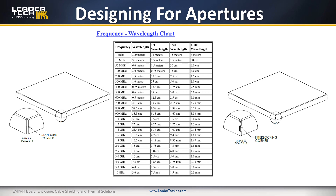One design that we like to use is the interlocking corner. You can see the shield on the right has an interlocking corner — they're almost like teeth. So when you form the walls of the shield down, the teeth interlock and break up that linear aperture. Rather than having one long seam, you have several smaller openings to give you better shielding effectiveness.